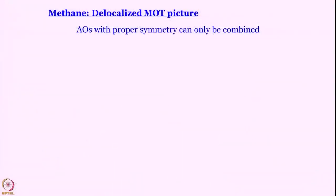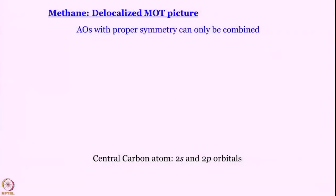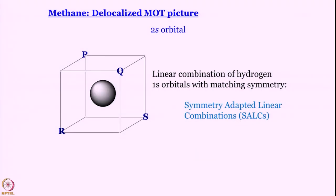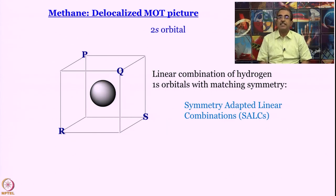Delocalized molecular orbital theory picture of methane. To do that we use the principle that atomic orbitals with proper symmetry can only be combined — and what that means will become clear as we proceed. First, let us think about the central carbon atom: the valence orbitals are 2s and 2p. For the hydrogen atoms, the orbitals participating in bonding are the 1s orbitals. We will denote the four hydrogen atoms as p, q, r, and s, and we will take appropriate linear combinations of their 1s orbitals to generate combinations that have the right symmetry to give bonding and antibonding combinations with the central 2s or 2p orbital of carbon.